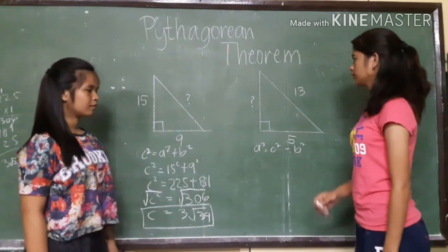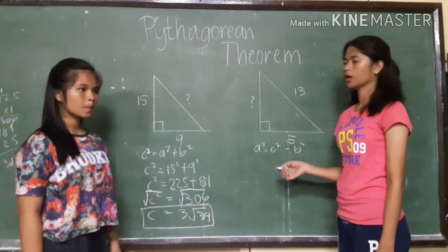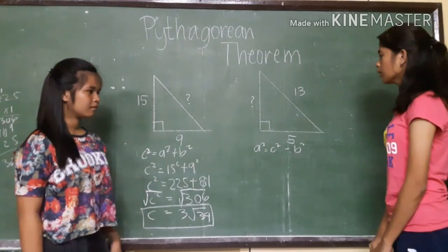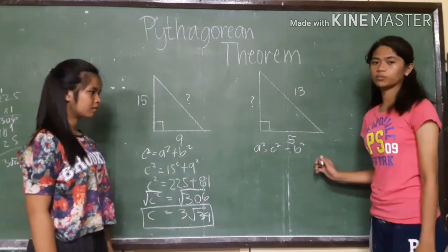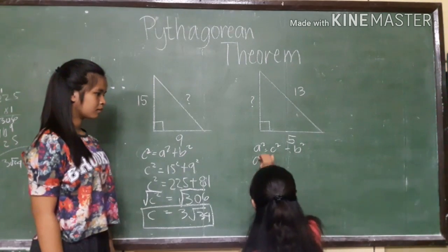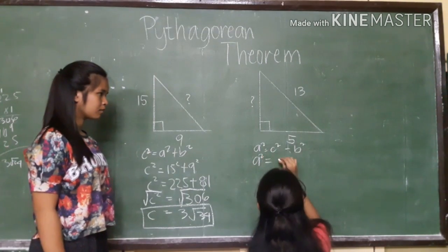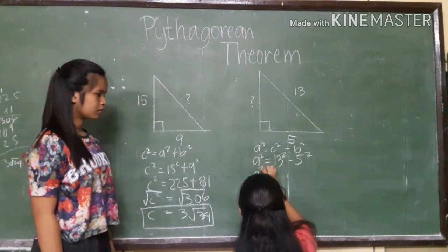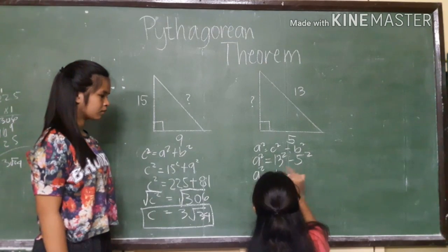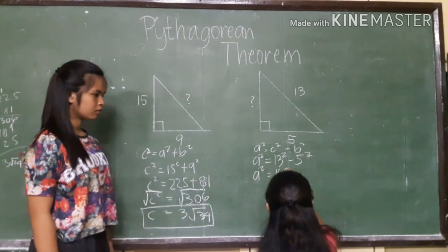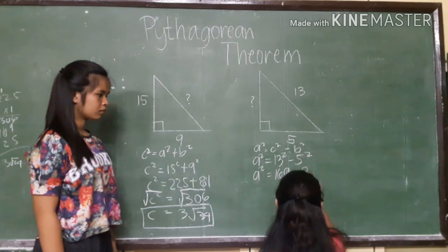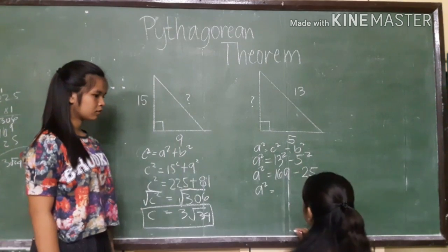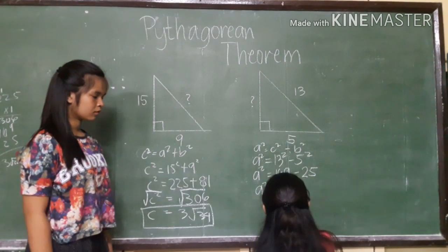And now let's try to solve this problem. In this problem, a leg length of the right triangle is missing. We can use the formula a squared equals c squared minus b squared. A squared is equal to 13 squared minus 5 squared. 13 squared is equal to 169, and 5 squared is equal to 25. Subtracting, 169 minus 25 is equal to 144.